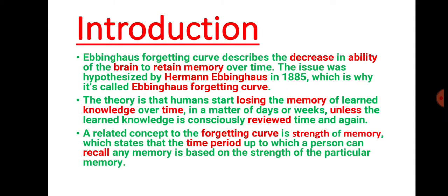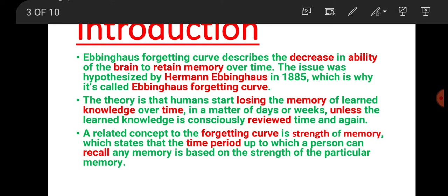Today we are going to learn about forgetting curve and its relationship with time and retention. Herman Ebbinghaus was the first one who derived the forgetting curve and he describes the decrease in the ability of the brain to retain memory over time. He was the first psychologist who described that the brain's ability to remember is reduced with time over time.